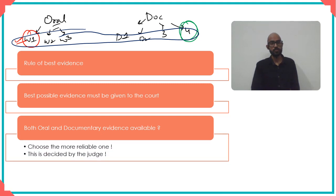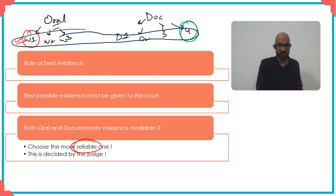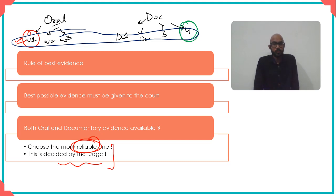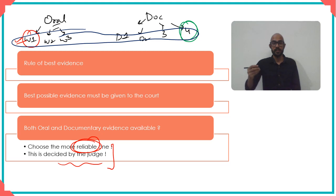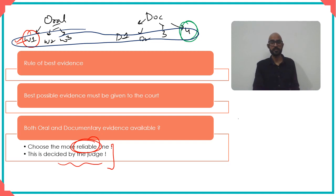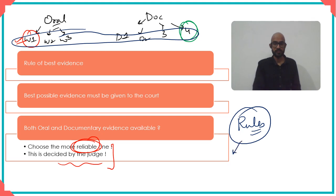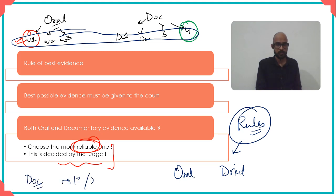For that, you choose the most reliable one, and that reliability is decided by the judge. You make both available and the court decides what is reliable and what the best one is. As far as the Indian Evidence Act is concerned, the rules are simple: oral evidence should be direct and documentary evidence should be either primary or secondary.